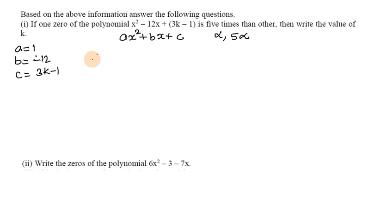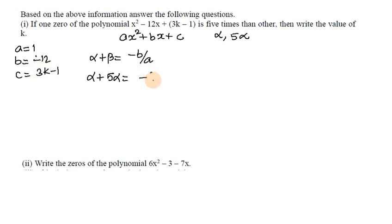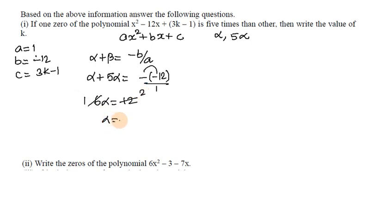Using the formula alpha plus beta equals minus b by a, with alpha and 5 alpha as the two zeros: 6 alpha equals minus(-12)/1, so 6 alpha equals 12, giving alpha equals 2.